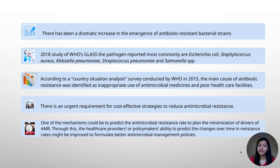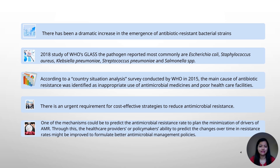In recent years, there has been a drastic increase in the area of AMR. According to the WHO study in 2018 under the Global Antimicrobial Surveillance System, the most commonly reported pathogens are Escherichia coli, Staphylococcus aureus, Klebsiella pneumoniae, Streptococcus pneumoniae, and Salmonella species. According to WHO country situation analysis, the main cause of resistance is inappropriate use of antimicrobial medicine and poor healthcare facilities, so there is an urgent requirement for cost-effective strategies to reduce antimicrobial resistance.